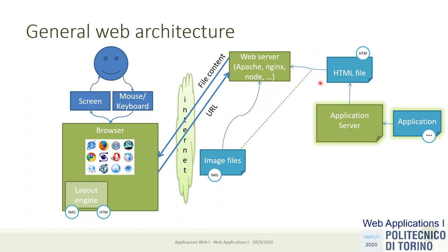The application server must match the application. If I decide to write an application in PHP, I will install the PHP interpreter and integrate it with the web server so they can communicate. The web server can delegate to the PHP interpreter the interpretation of a page, which will interpret the script and return the HTML back. There are standard ways of configuring and integrating an application server inside the web server; they are two separate components but work very strongly together.